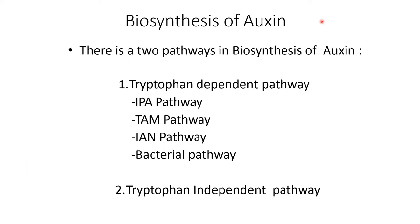Biosynthesis of auxin. There are two pathways in the biosynthesis of auxin. One is the tryptophan-dependent pathway and another one is the tryptophan-independent pathway. In the case of tryptophan-dependent pathway, it is further divided into four types: IPA pathway, TAM pathway, IAN pathway, and bacterial pathway.